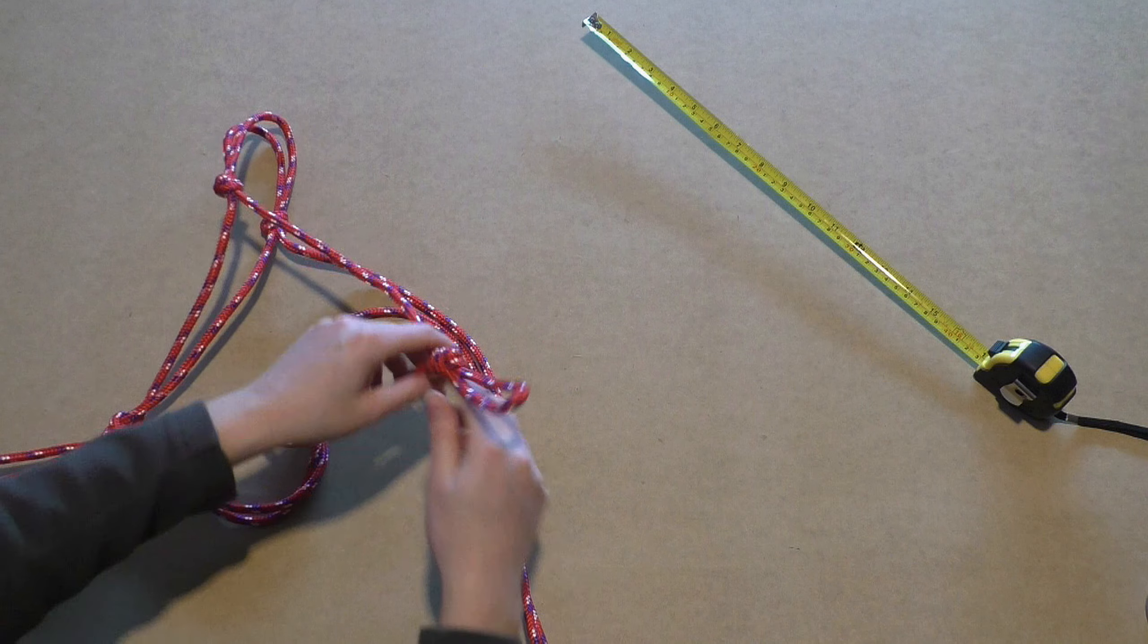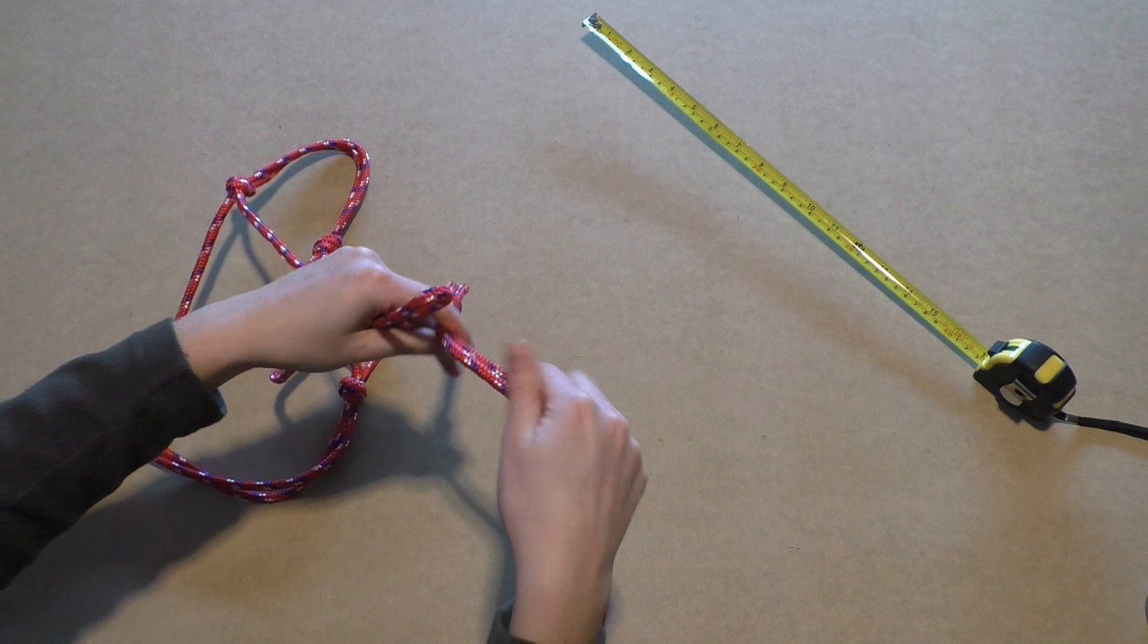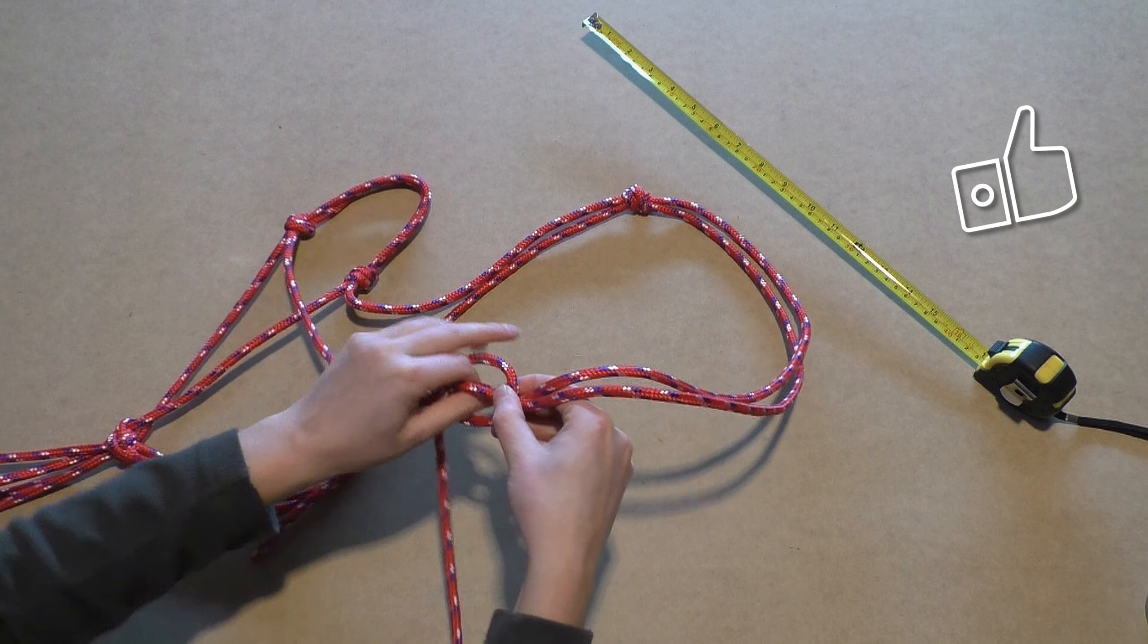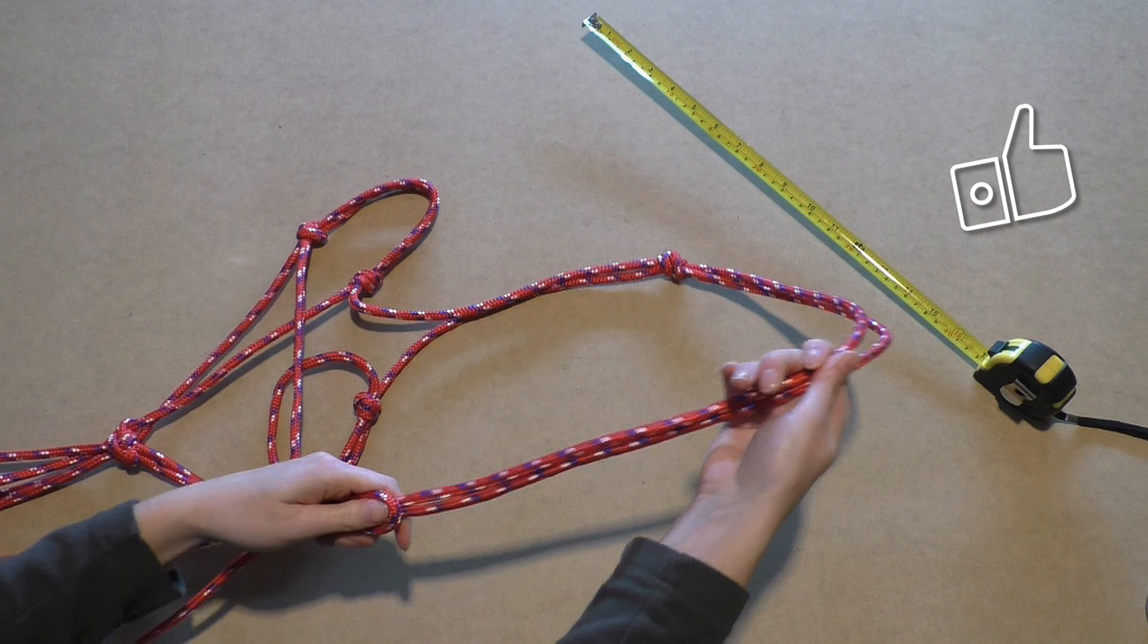The long loose ends that are left now will form the rope that goes behind the ears of the horse. Feed it through the overhand loop to close the halter.